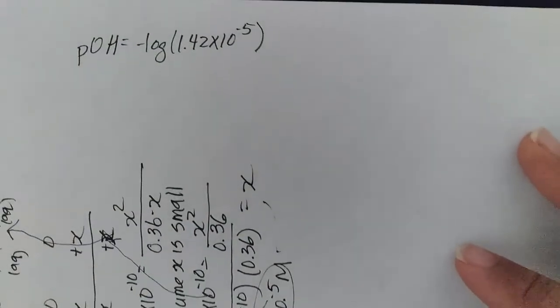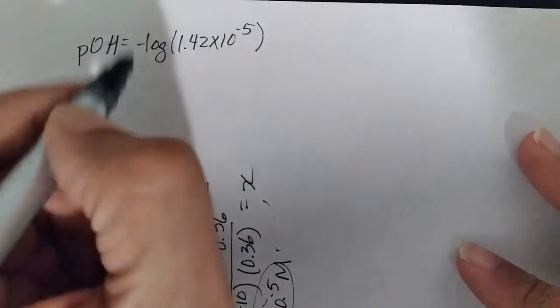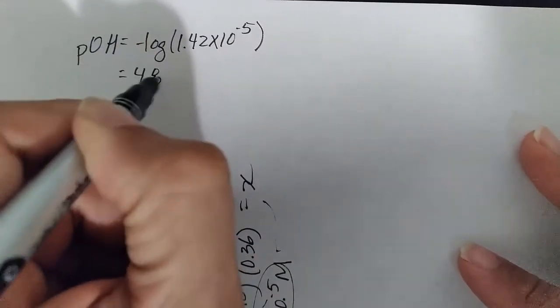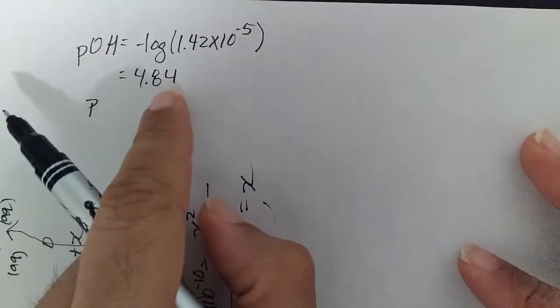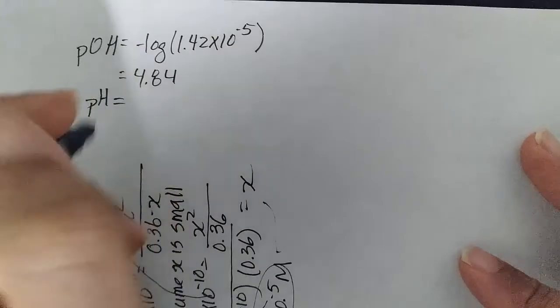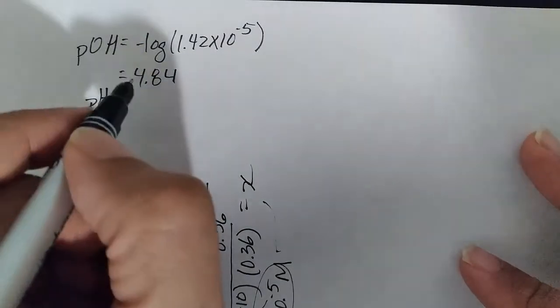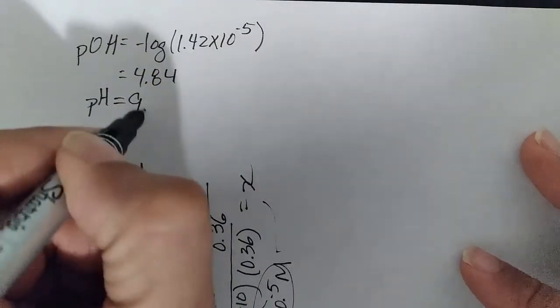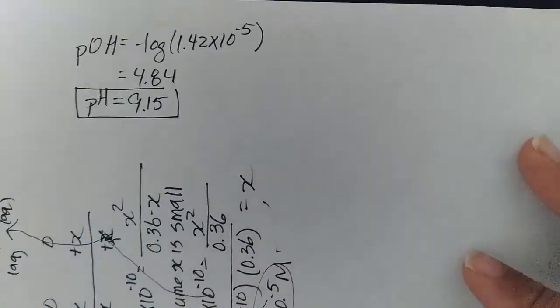So on my calculator that gives me an answer of about 4.84. That's pOH. A lot of people mistakenly stop at this step. The question is asking us for pH, right? So 14 minus 4.84 is 9.15, and that will be the answer to this problem.